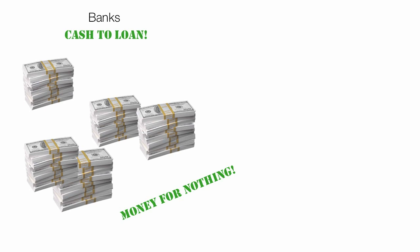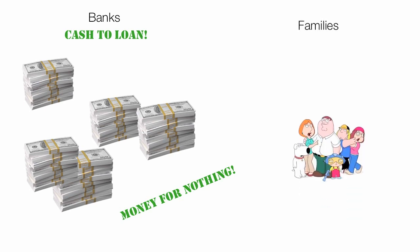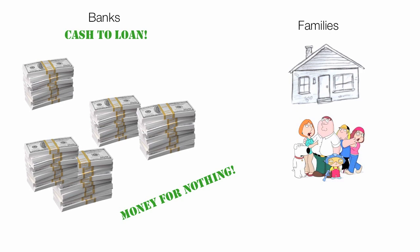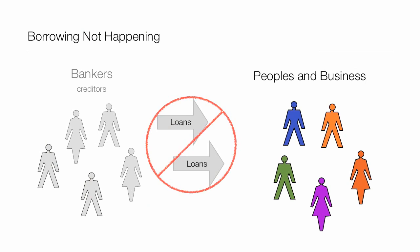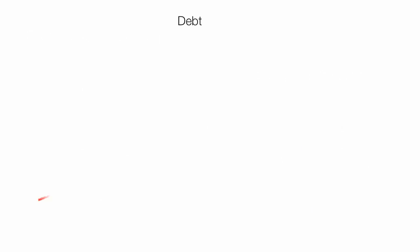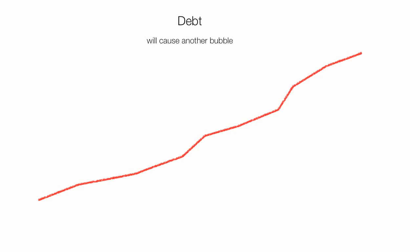Now banks have cash to loan — they got money for nothing — and these families can buy houses again. The problem is, this whole thing is probably going to repeat once again. When bankers and creditors start loaning people money again, hopefully the economy will get back on track — at least that's what the theory is. One thing we know for sure: this whole policy is going to increase debt, and there's going to be some new bubble — another debt bubble of some sort.